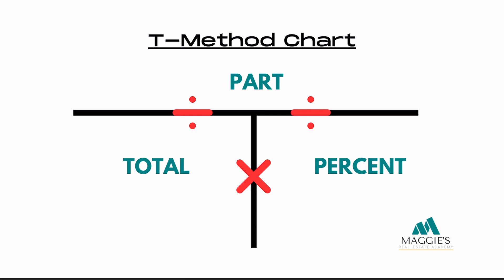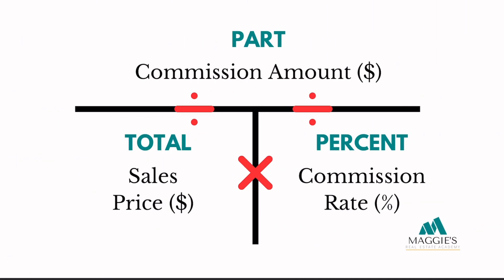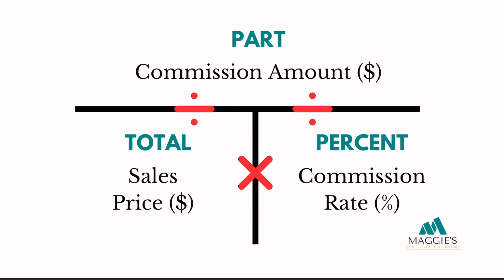Before we jump into solving commission problems, let's understand what the T-method is and why it's so valuable. When you encounter a commission problem, it often involves multiple variables such as the total sales price, commission rate, and sometimes adjustments or splits. The T-method is a simple yet systematic approach that helps you break down complex commission scenarios into manageable steps and takes the guesswork out of whether you have to multiply or divide.